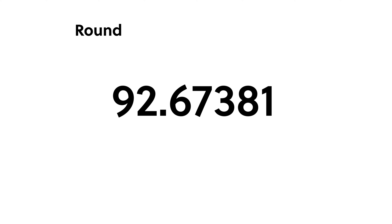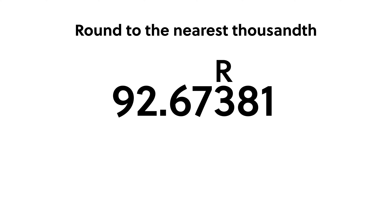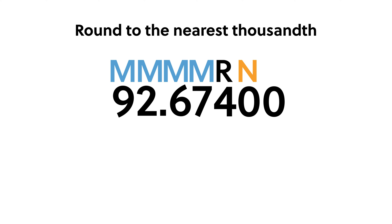What happens if we want to round a number to a fractional place — that is, to a place to the right of the decimal point? The rules are exactly the same. For instance, suppose we want to round 92.67381 to the nearest thousandth. Our rounding digit is the 3 in the thousandths place. We keep all the digits to the left of the 3. Since the next digit, 8, is 5 or greater, we round the rounding digit up to a 4. The numbers after 4 become 0, giving us 92.67400, which we can write as 92.674.